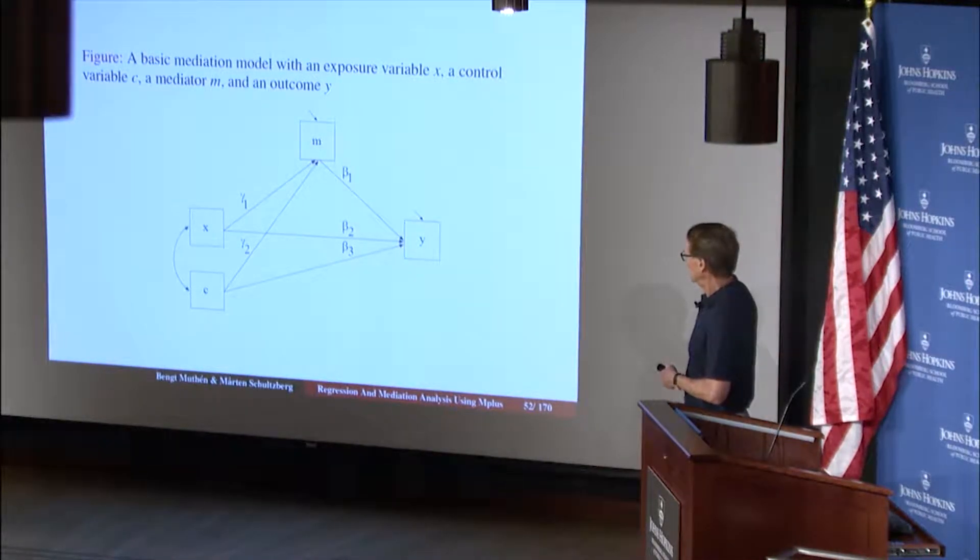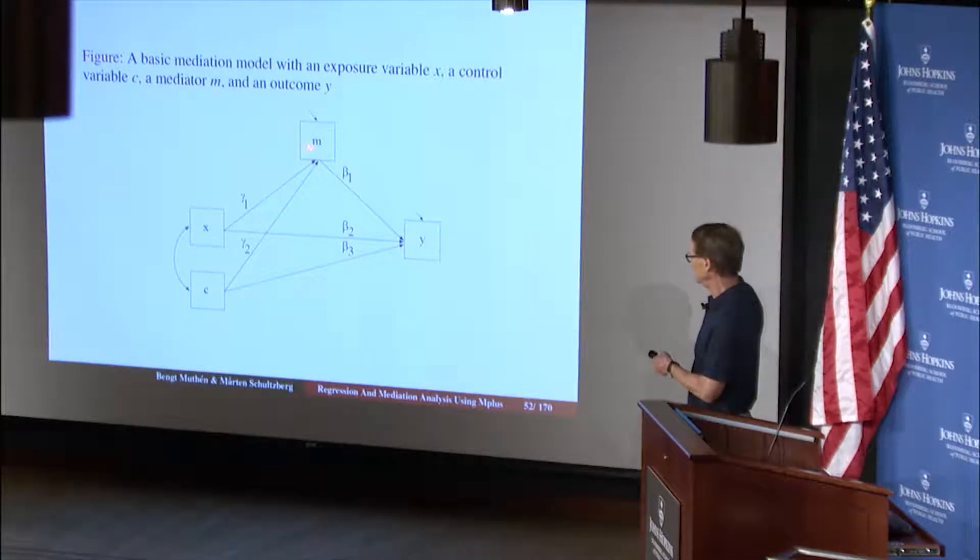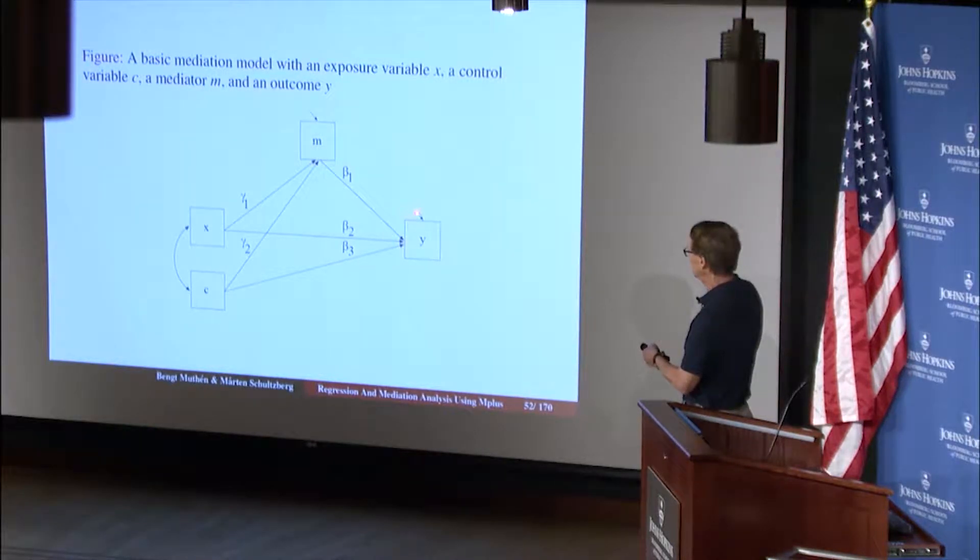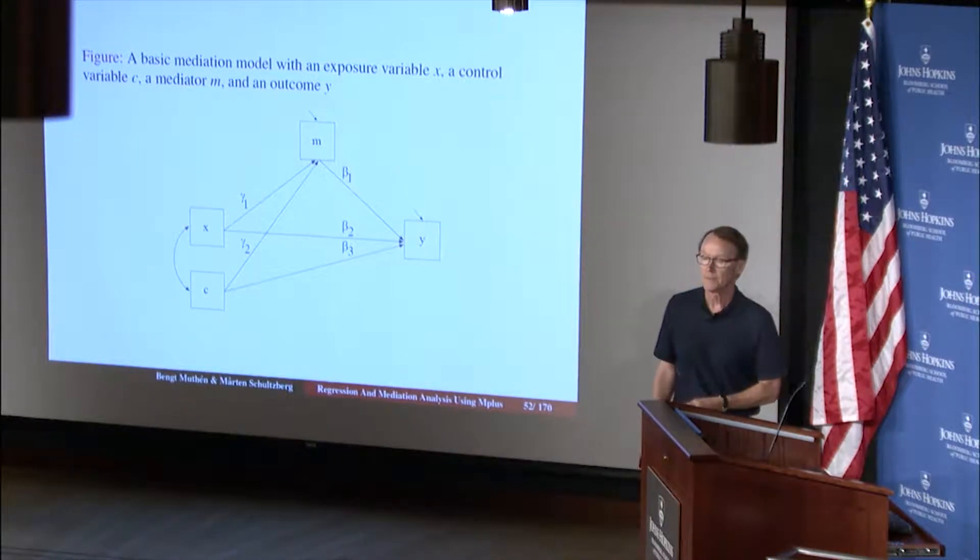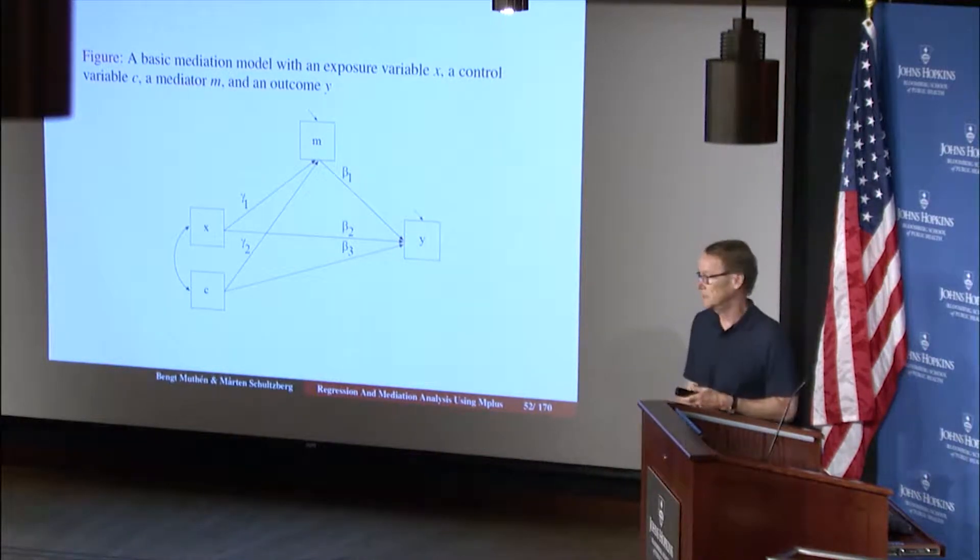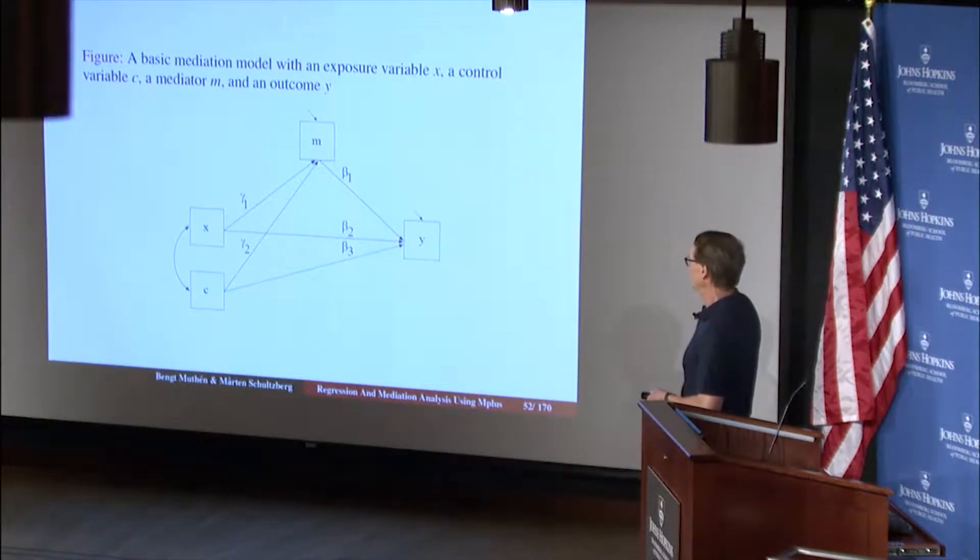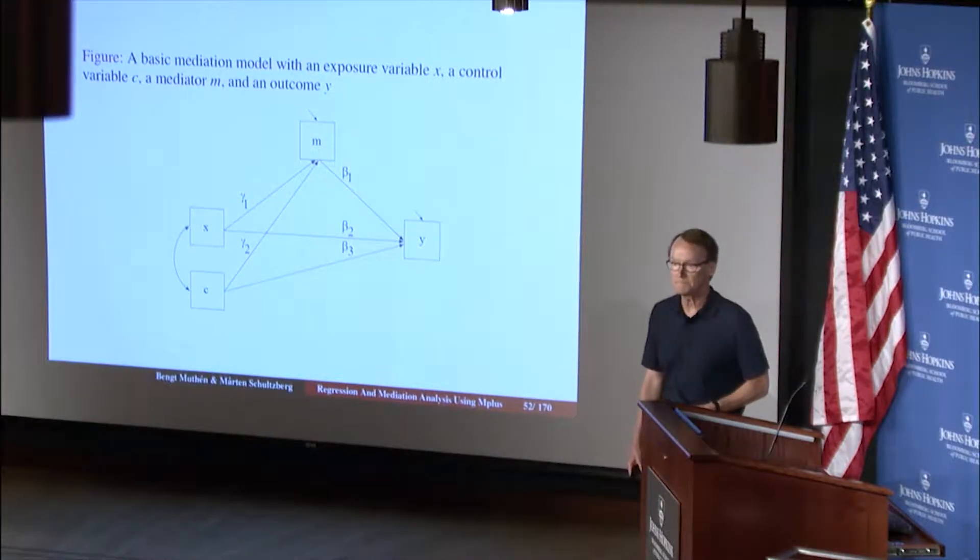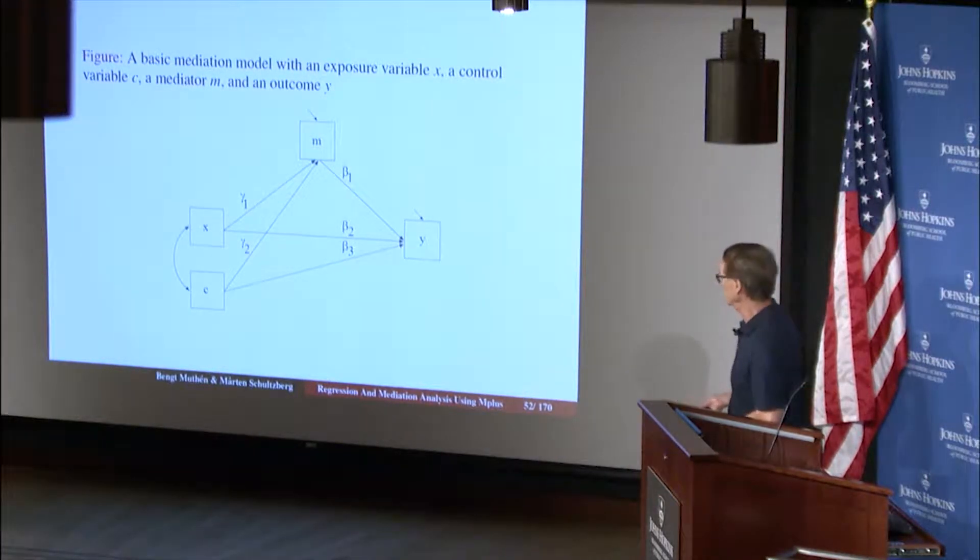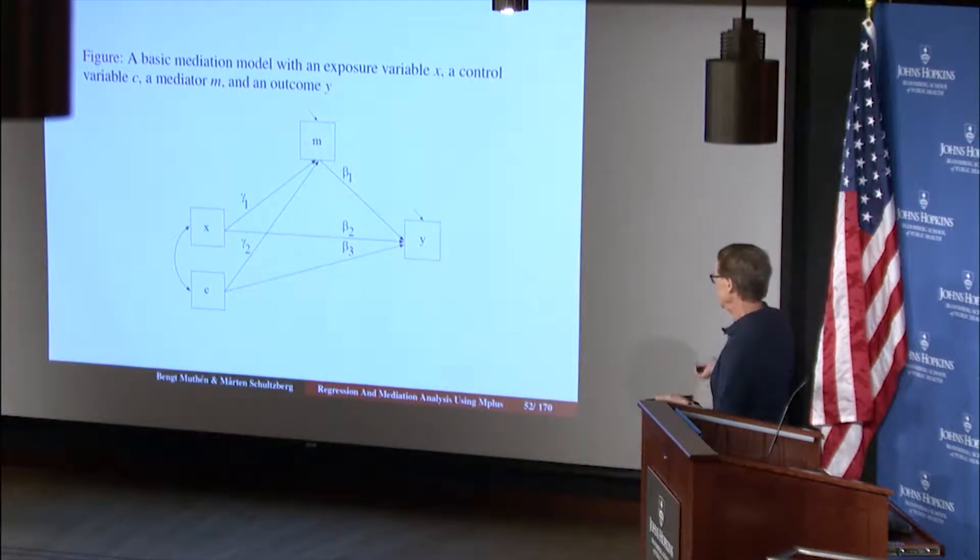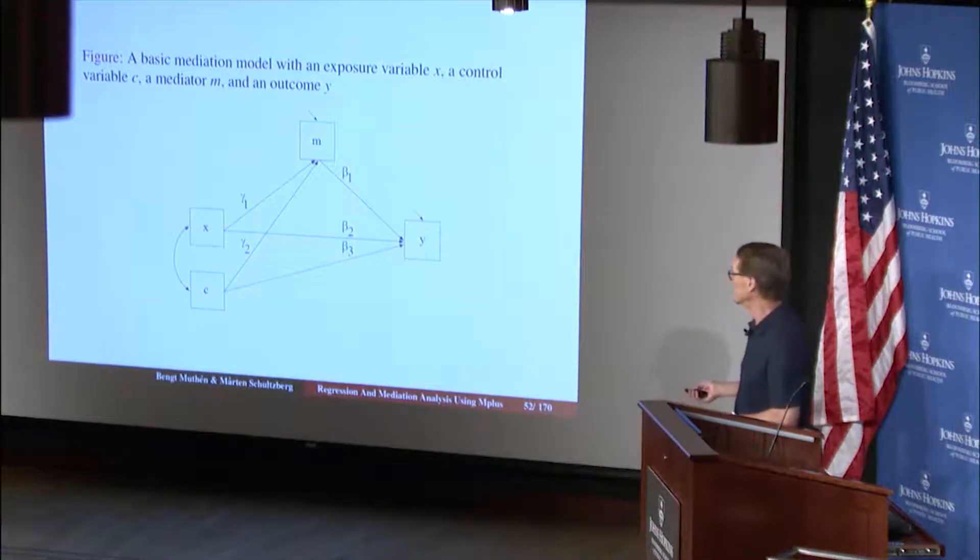But in mediation studies even more so, it helps you avoid a basic problem, an Achilles heel of mediation analysis: the potential for a correlation between M and Y that is not accounted for by the model. If you didn't have C but it still influenced both of them, that would imply the residuals of Y and M would be correlated. You can't estimate that correlation on top of this regression; it's not identified. So you have C to avoid mediator-outcome confounding. In this case we have no interactions, no moderation.